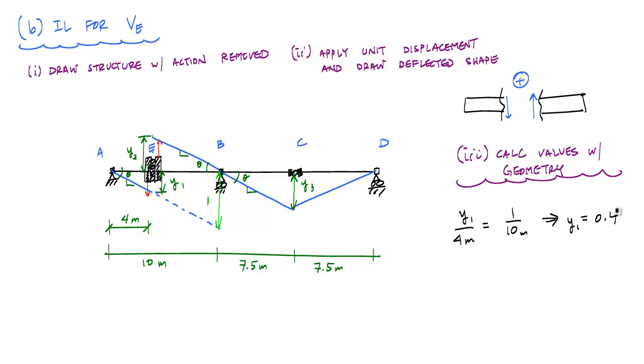Then I could use similar triangles, which also tells me that y1 over 4 meters is equal to y2 over 6 meters, which tells me that y2 is equal to 0.6. That's one way to do it. Another way I could determine y2 is knowing that y1 plus y2 is equal to 1. And that would have also told me that y2 is equal to 0.6.